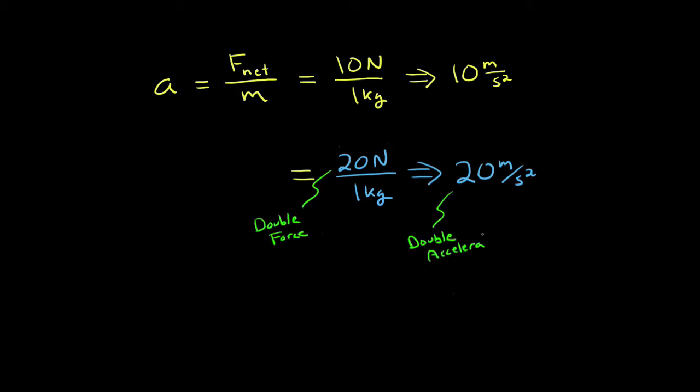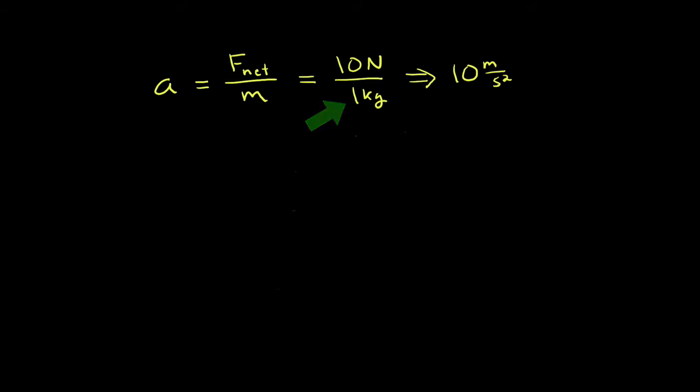What happens when you double the mass? Say from 1 kilogram to 2 kilograms. With mass in the denominator, we see that a larger mass means a smaller acceleration. Double the mass and you'll have half the acceleration.